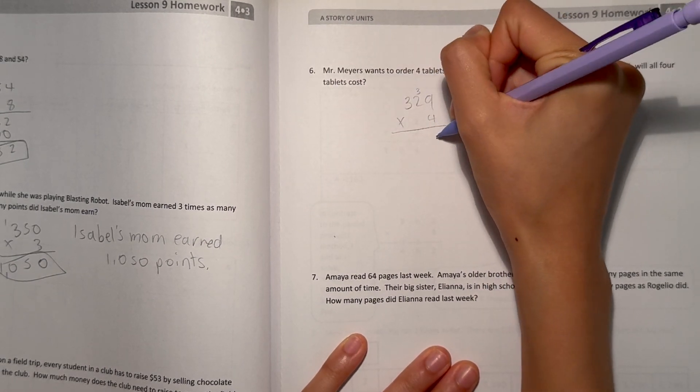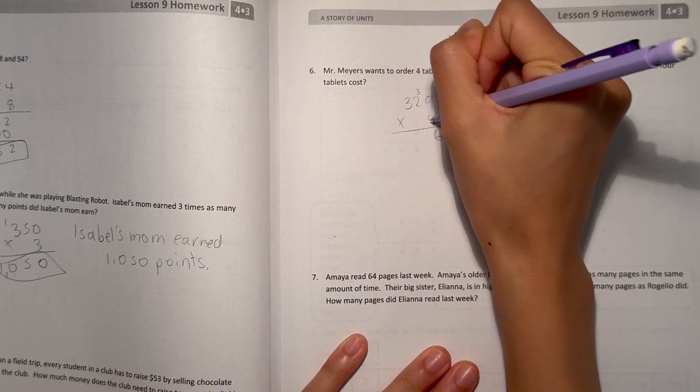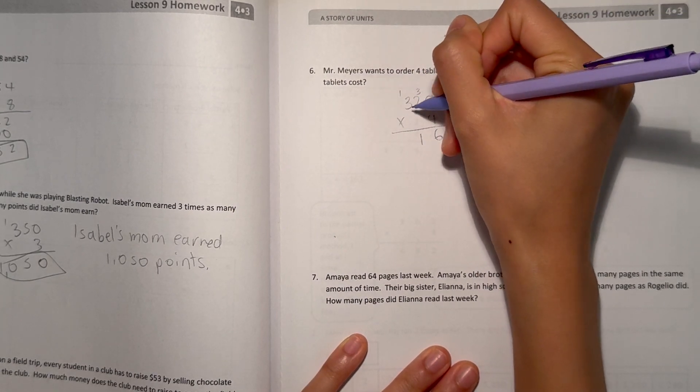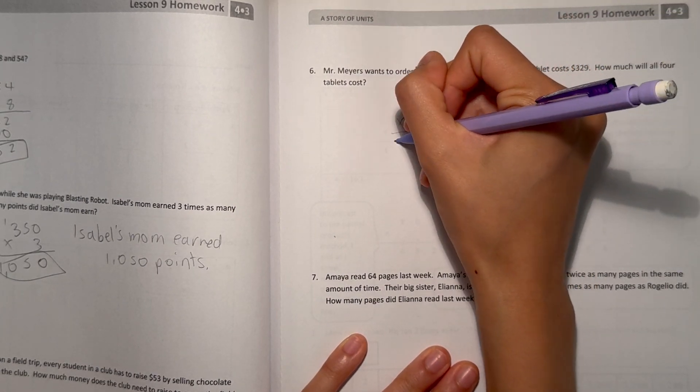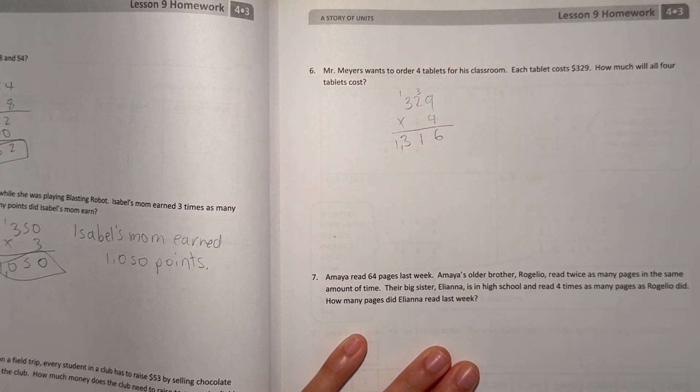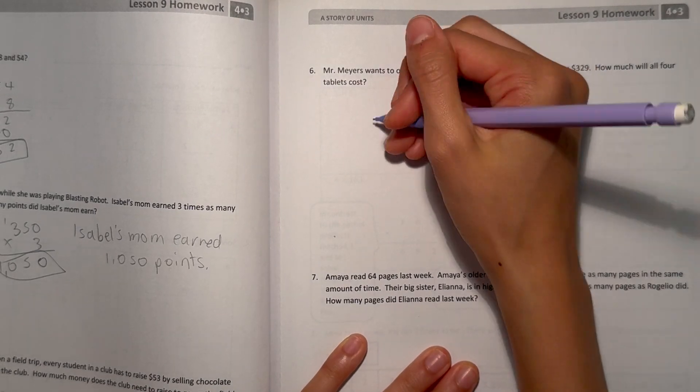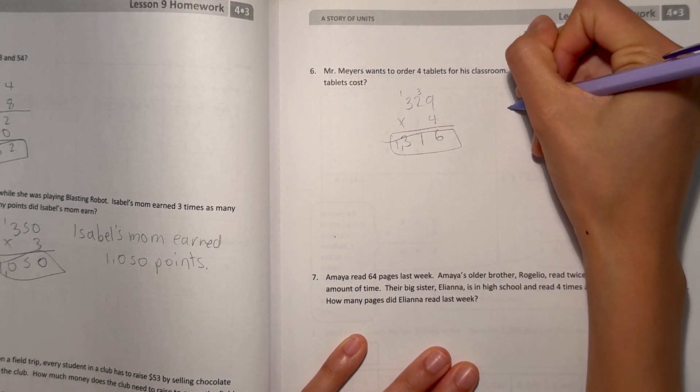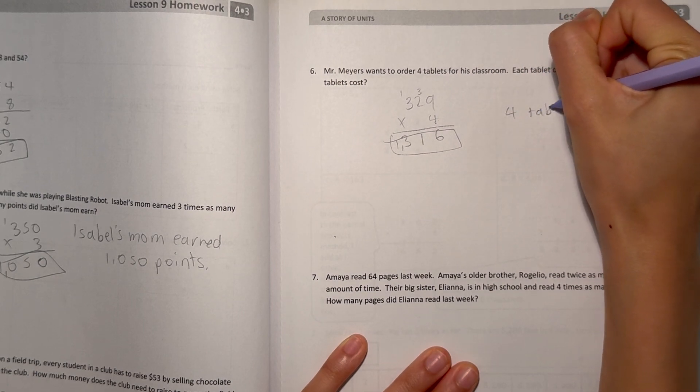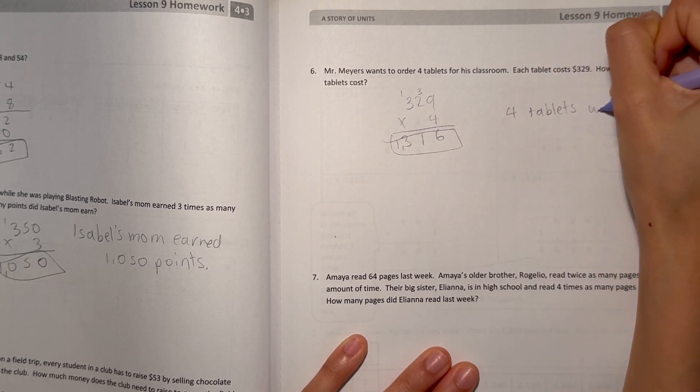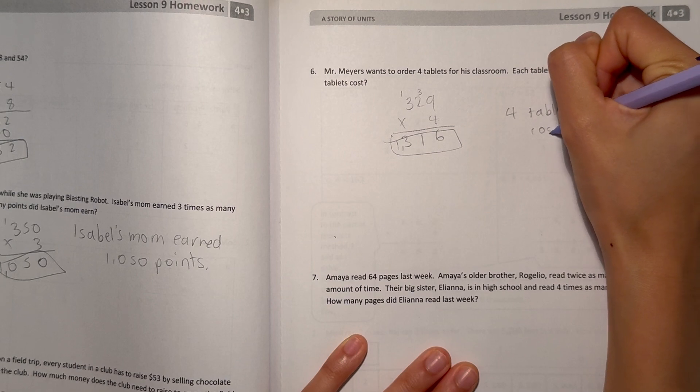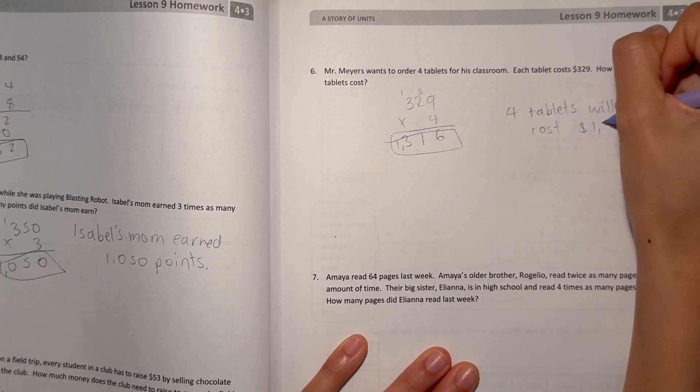9 times 4 is 36. 2 times 4 is 8, plus 3 is 11. And 3 times 4 is 12, plus 1 is 13. 1,316. So, that means, 4 tablets will cost $1,316.